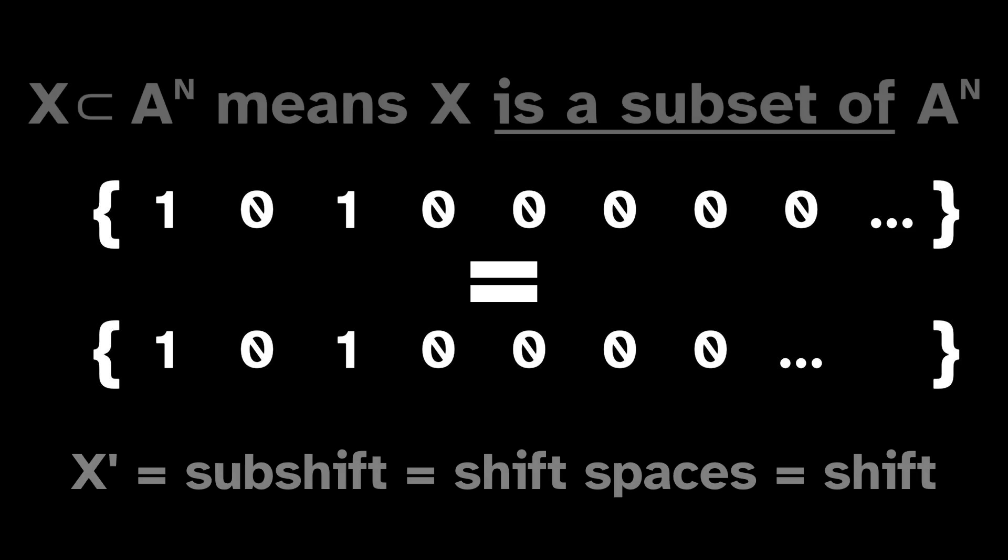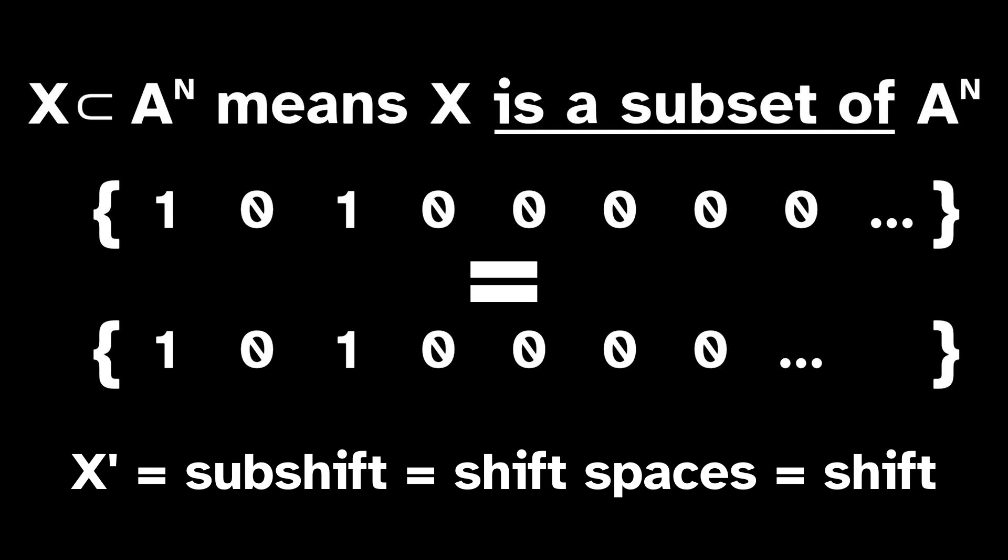Instead of calling X a subsystem, we can call it a subshift because it's a subsystem of the full shift. We refer to these objects as subshifts, shift spaces, or just shifts interchangeably.